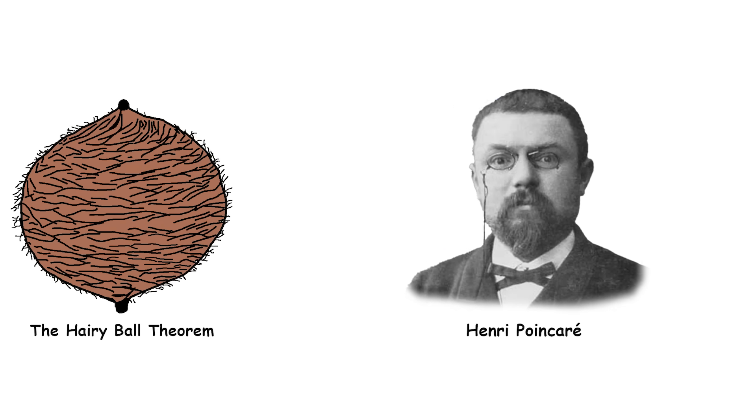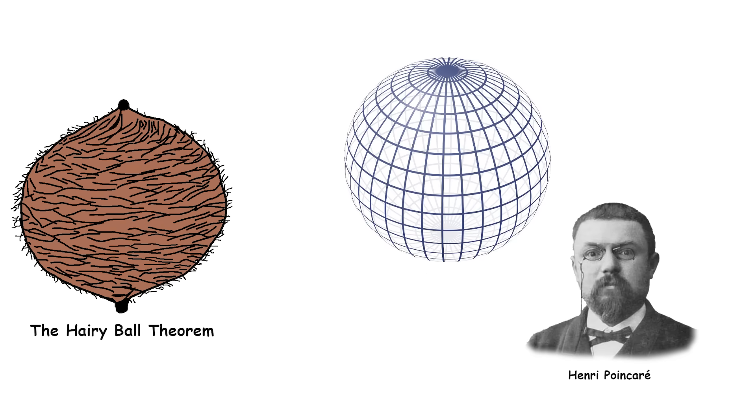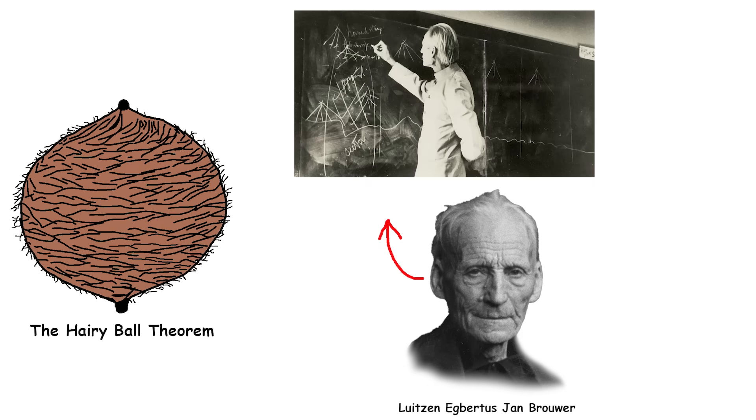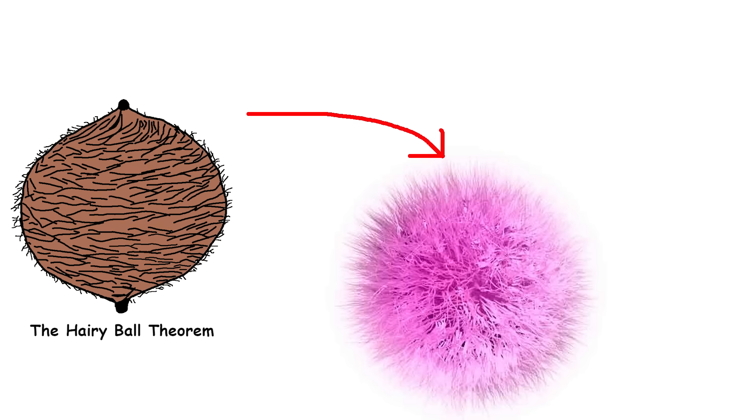Henri Poincaré first proved this for the 2D sphere, the ordinary sphere, in 1885. Later, Luitzen Egbertus Jan Brouwer extended it to higher even dimensions. Next time you see a hairy ball, remember that even math has rules for combing.